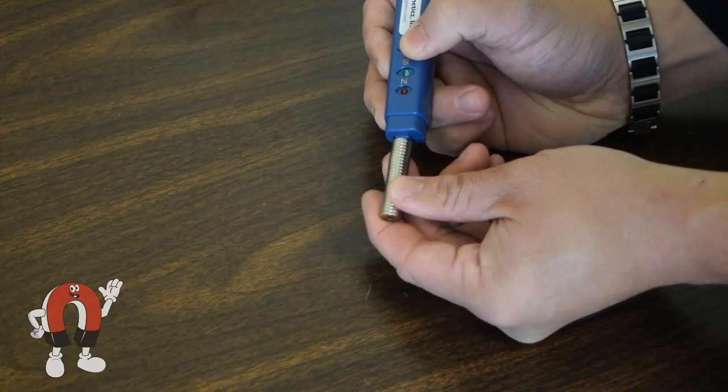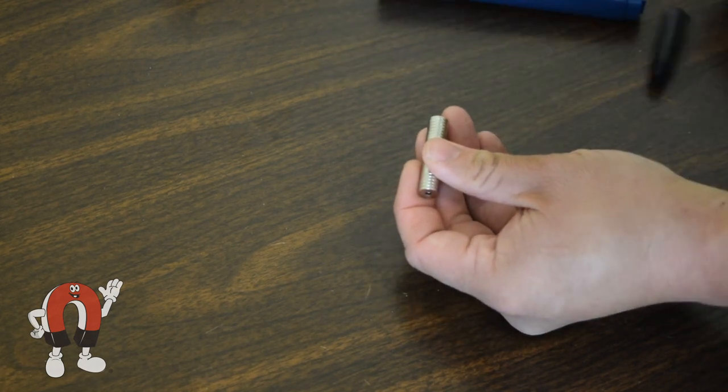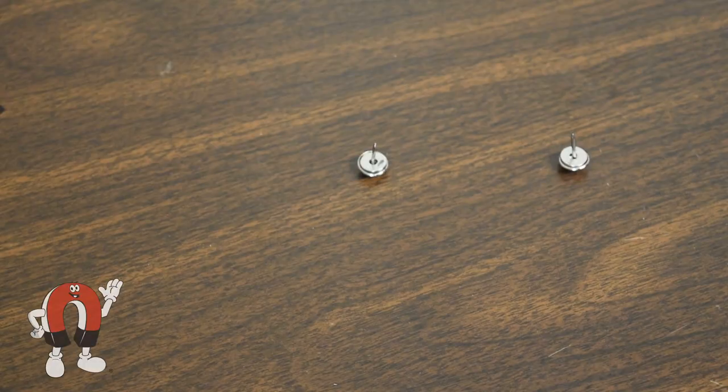To make sure that the trains would attract consistently, we marked the north pole of all the magnets. We're using a ring magnet, our product number R621. The link is below.